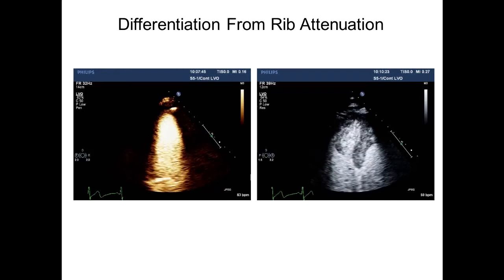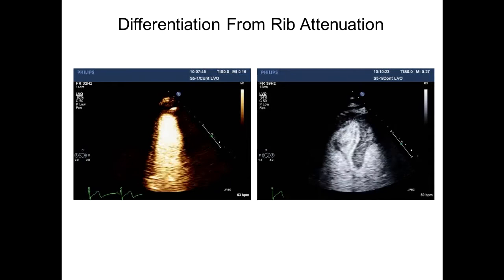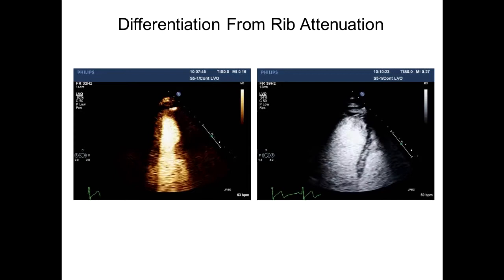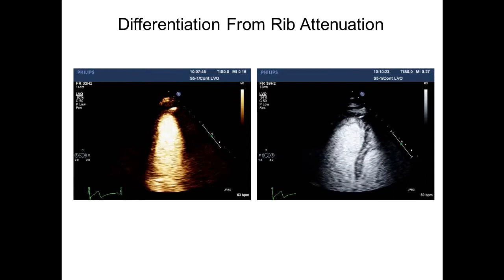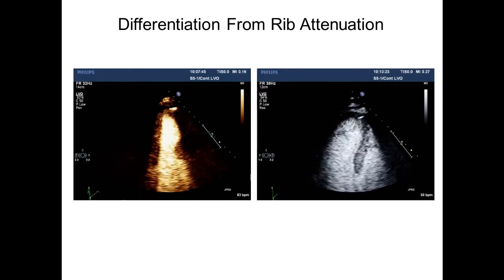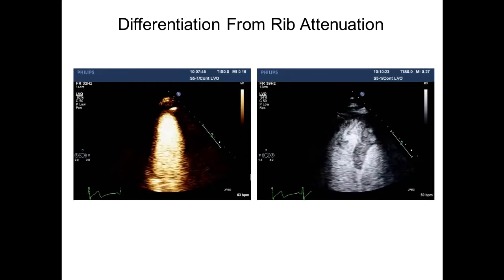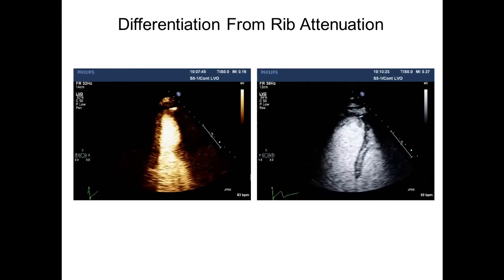Attenuation from too-high contrast agents is not the same as attenuation from other sources. This example of rib attenuation in an apical three-chamber view shows the entire left ventricle filled in with no shadowing from micro-bubbles, but rib attenuation is taking out portions of the anterior septum. The sonographer on the right has moved the transducer and angled it further up to get away from the rib attenuation and see the anterior septum wall. Rib attenuation and other forms of attenuation are not the same thing as bubble attenuation, although they both essentially block ultrasound signals.